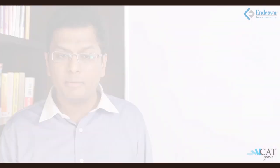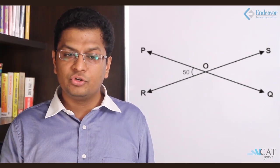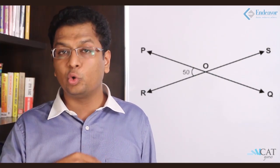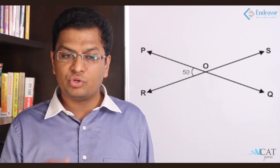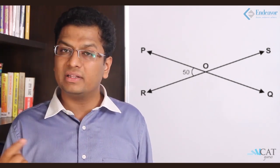Practical example: In the given figure, PQ and RS are two lines intersecting at O. If angle POR is 50 degrees, find the other three angles. RS is a straight line, so angles on it add up to 180 degrees. Since angle POR is 50 degrees, angle POS becomes 130 degrees.